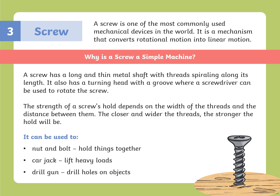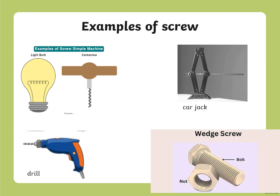The closer and wider the threads, the stronger the hold will be. Examples of screws include nut and bolt, car jack, and drill gun. A nut and bolt can hold things together, a car jack can lift heavy loads, and a drill gun drills holes in objects. Other examples are a corkscrew to open a bottle, a light bulb, a car jack to lift a car for replacing tires, and a drill gun and nut and bolt.